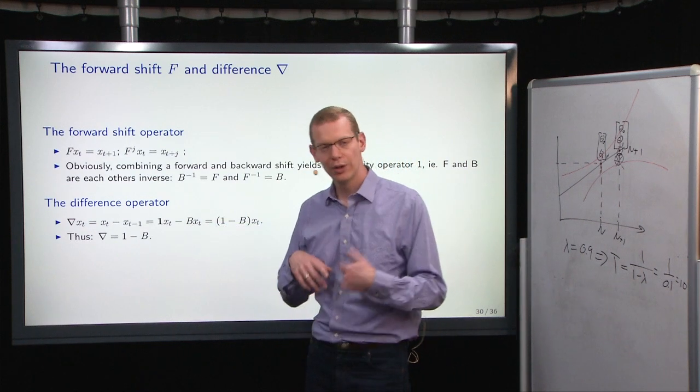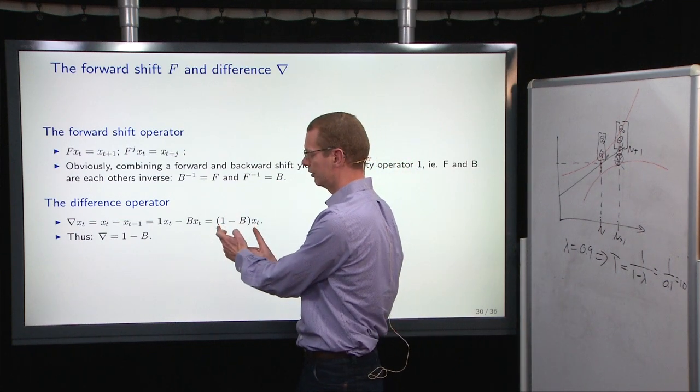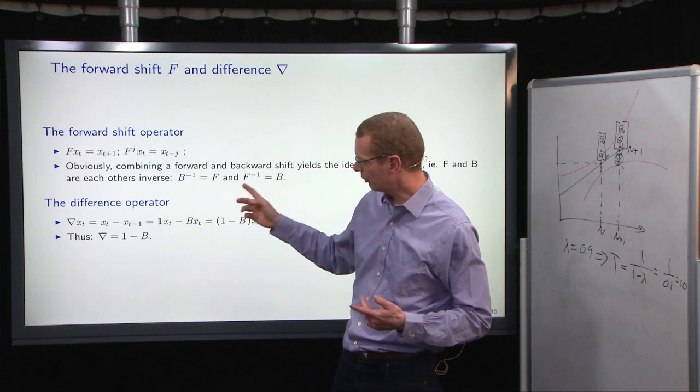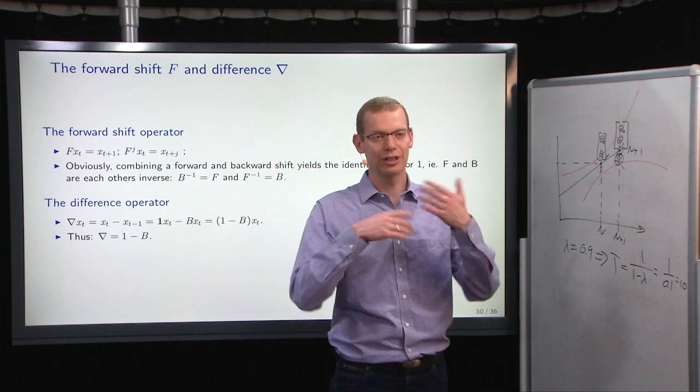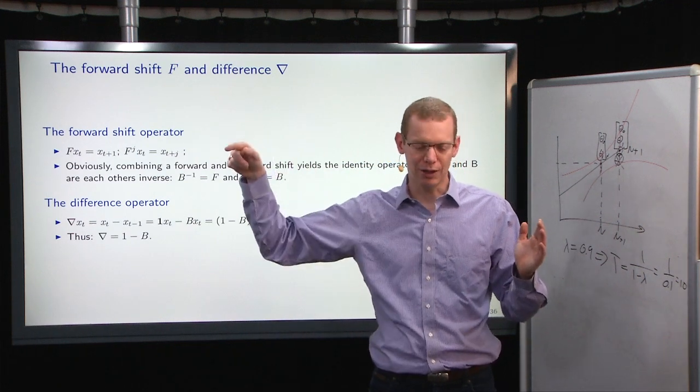So we can treat this as an operator that is 1-B as its own operator on x_t. So the difference operator is defined as 1-B. Again, we can take that to some power, then it will be 1-B to that power.